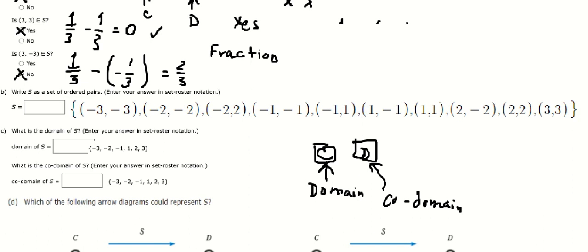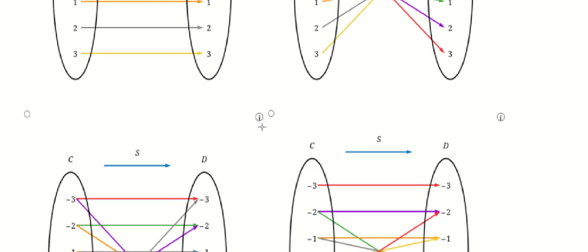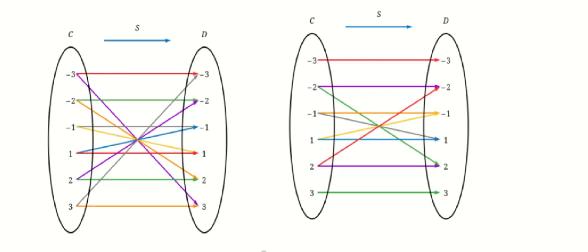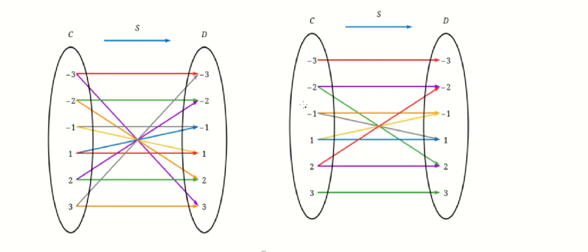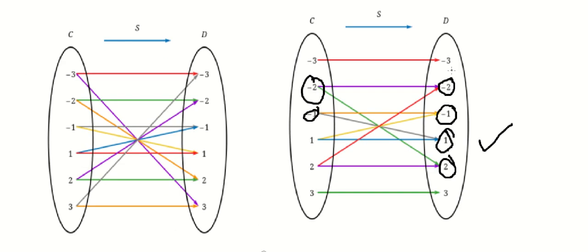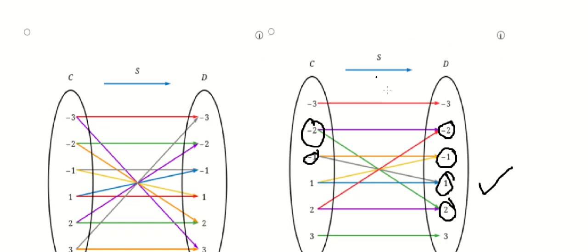The last one is about the diagram. If we look carefully, we can see that only this one is correct. Why? Because negative number three cannot map to positive number three — they create a fraction, and that's the reason we don't include that pair. So only negative two maps to two, negative one maps to negative one. Negative three and positive three cannot go to the opposite side because they create a fraction, so we just select this one. Thank you for watching.